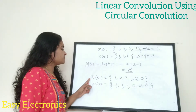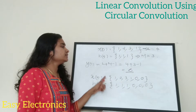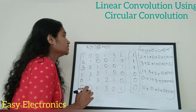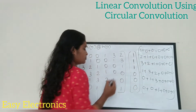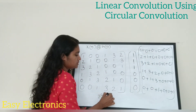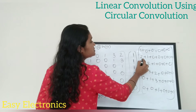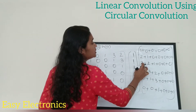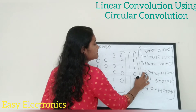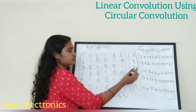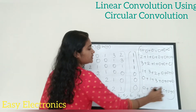So this is your new x of n and h of n — you have changed the length of both sets equal to 6. Now taking the circular convolution using the matrix method, the result y of n is: first element is 1, second is 2+1 = 3, third is 3+2+1 = 6, fourth is 1+3+2 = 6, fifth is 3+1 = 4, and the last one is 1.